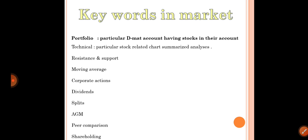Technical analysis relates to chart summary and analysis for a particular stock. Resistance and support — resistance means the top level of price resistance, and support means the bottom level on a particular chart. We will go through these in detail later.